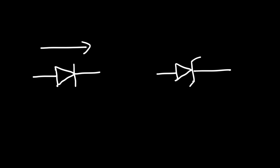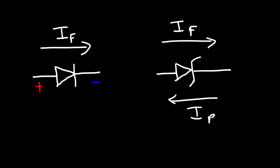In this lesson we're going to talk about Zener diodes, but to begin let's compare the Zener diode to a conventional diode. On the right this is the symbol for a Zener diode. A conventional diode is designed to allow conventional current to flow in the forward direction. In a Zener diode, current can flow in the forward direction like a conventional diode or it can flow in the opposite direction. A Zener diode is designed to operate in the reverse bias mode, and in this mode it has a certain reverse breakdown voltage, which is basically the rating of the Zener diode.